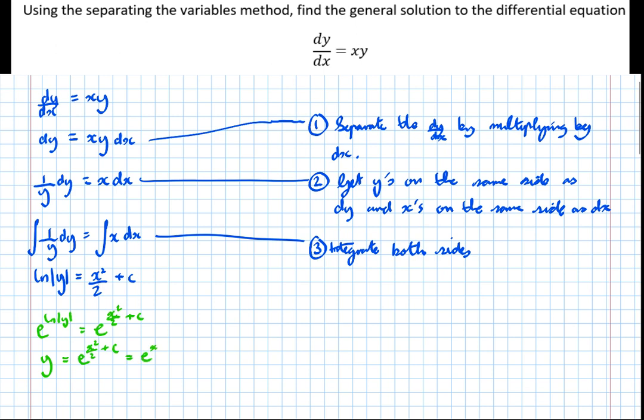However, we can see that there's an addition in the power there. That's the equivalent of writing e to the x squared over 2 times e to the power of c. So if we're times two things together with the same base, we add their powers.